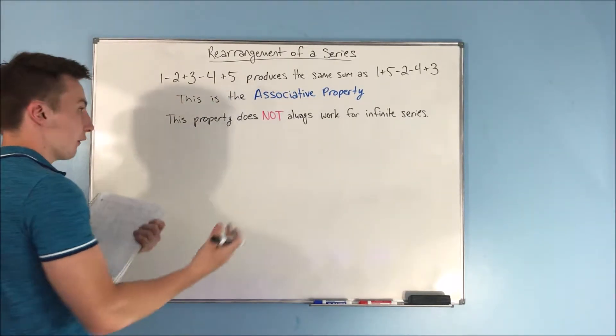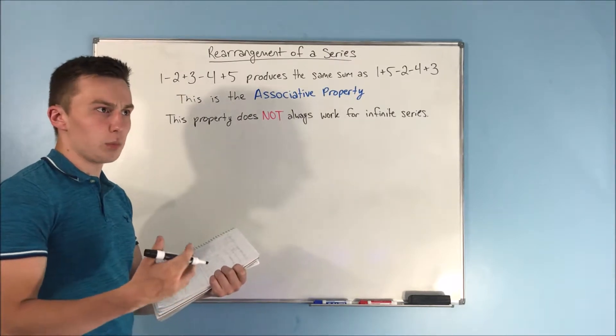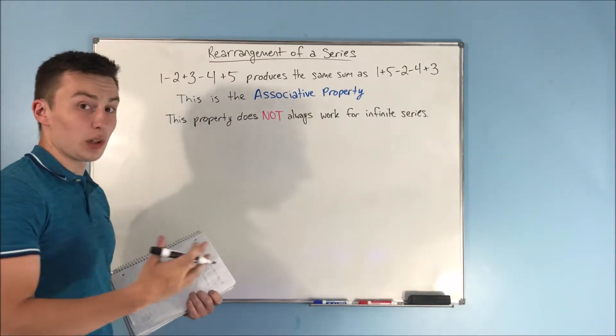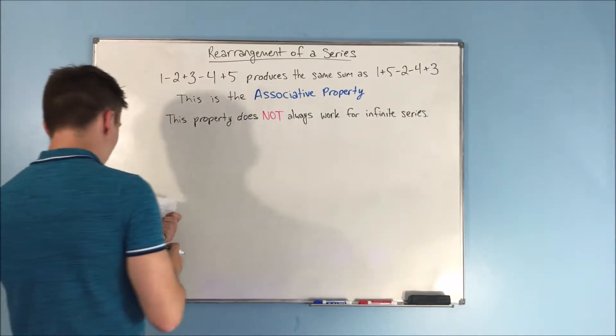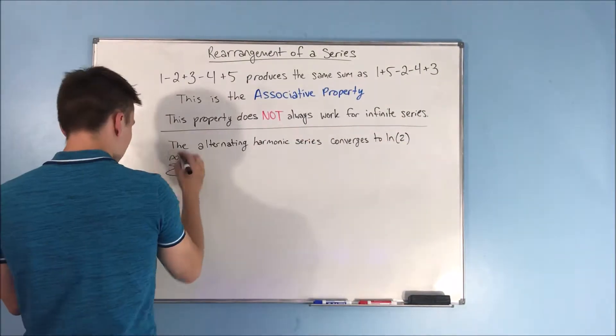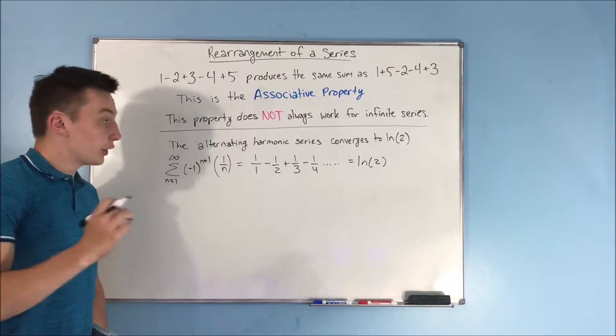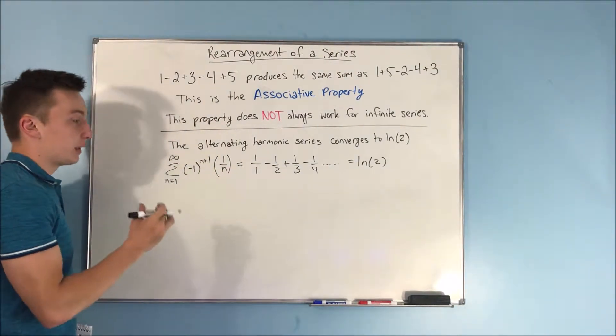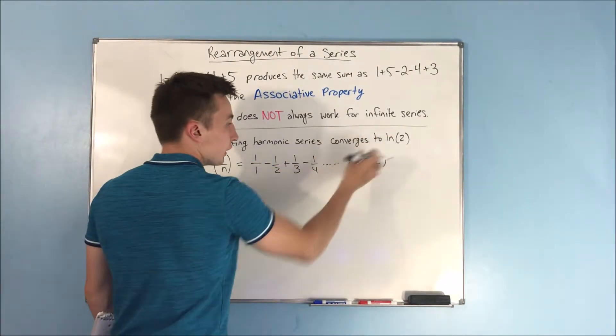To kind of see this, to see an example of when this doesn't work, we're going to consider the alternating harmonic series. So here is the alternating harmonic series. We know that that converges to natural log of 2.